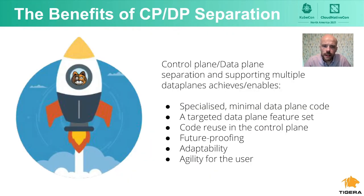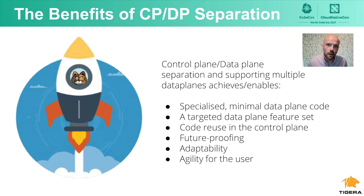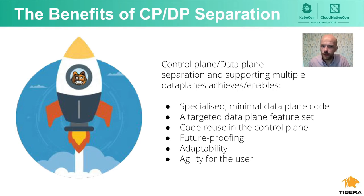There are several benefits of control plane and data plane separation. The first is specialized, minimal data plane code — keeping it lean carries many benefits. With only the minimal feature set, each line of code can be groomed in more detail from a security and performance standpoint, making the code easier to audit and keeping performance high. Also, having a targeted data plane feature set means you can use a different data plane for different use cases — one deployment might need compatibility with older kernels, another might need high cryptographic throughput.